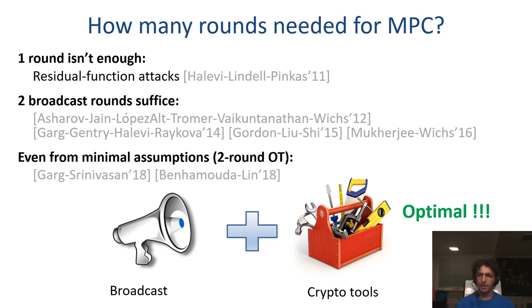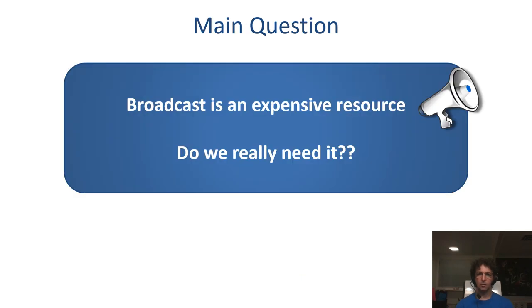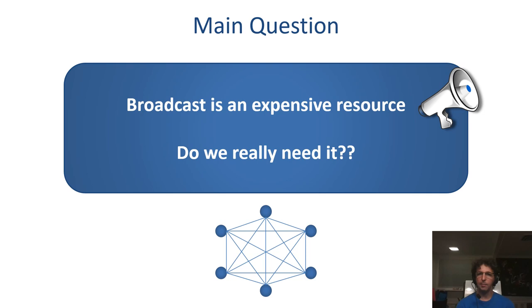While the cryptographic assumptions needed for two-round MPC are shown to be optimal, it is not clear whether the usage of broadcast is optimal as well. This leads us to the main question in this work. A broadcast channel is an expensive resource, and realizing it using a broadcast protocol will blow up the round complexity. So do we really need that assumption? Can we use point-to-point channels instead of a broadcast channel and still get two-round MPC, or somehow reduce the reliance on a broadcast channel?